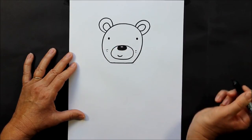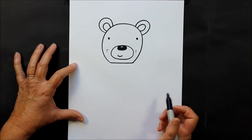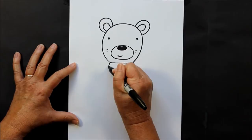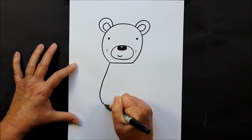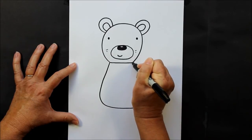Now we're going to go down to his body. So for this bear, he is a cartoon bear, so you're going to come down soft corners, soft edges and come back up.